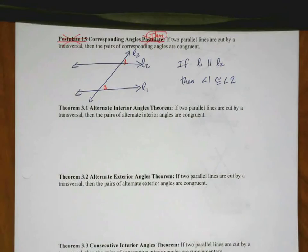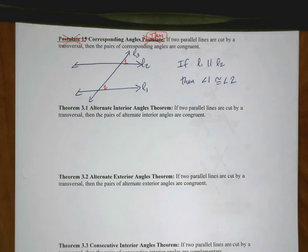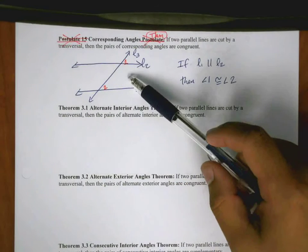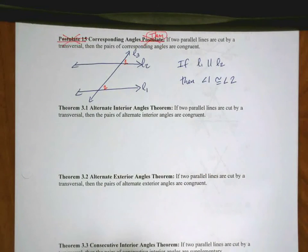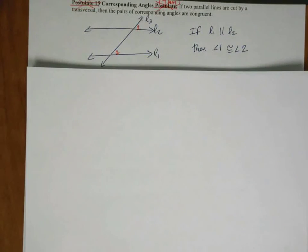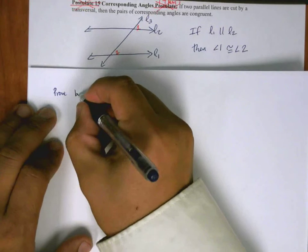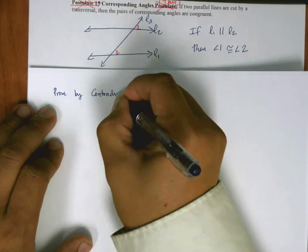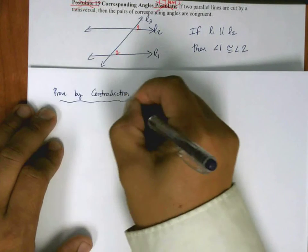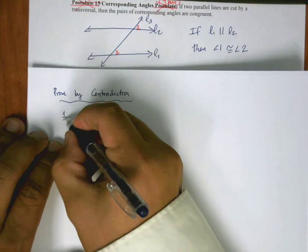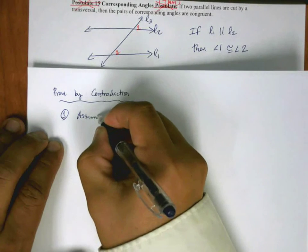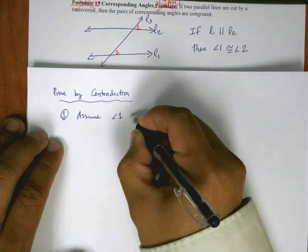I'm going to try and prove this statement is true. This is not exactly easy to do. We look at this and we assume it must be true, and we're probably right. But in order to really be sure, we have to prove it. We're going to do this proof by contradiction. The first statement we're going to make is: assume angle 1 is not congruent to angle 2.